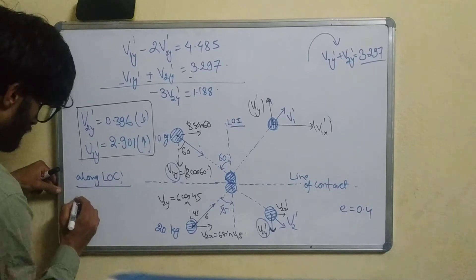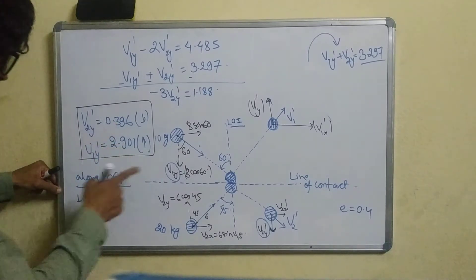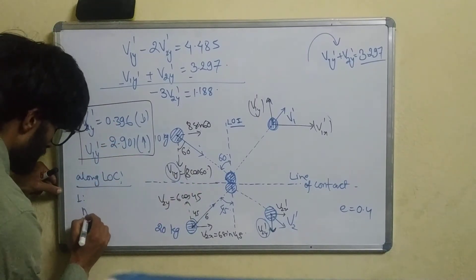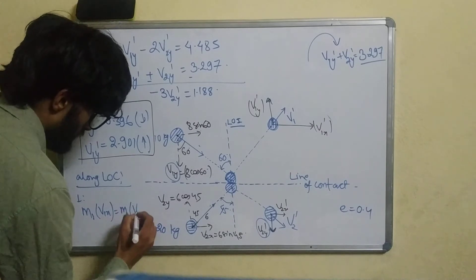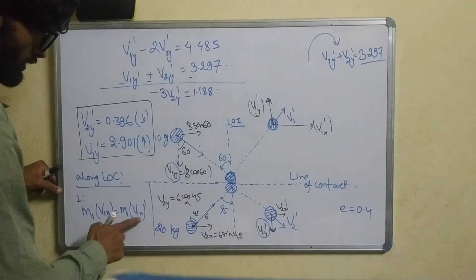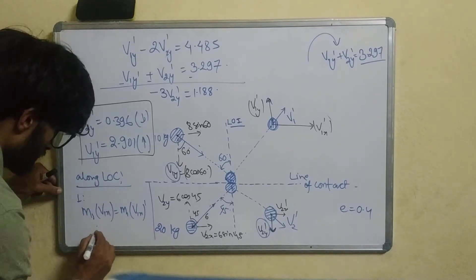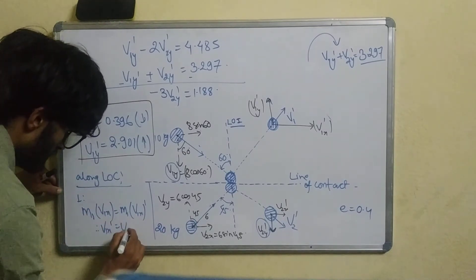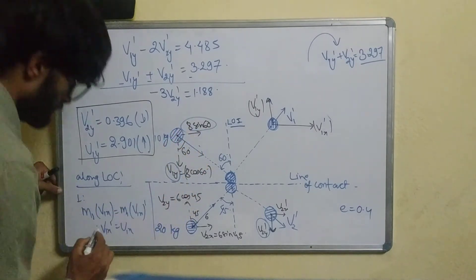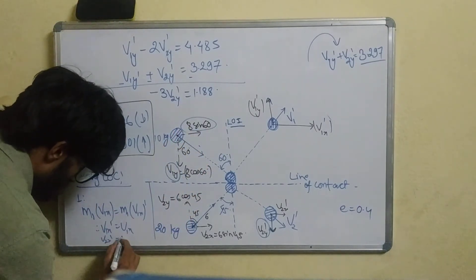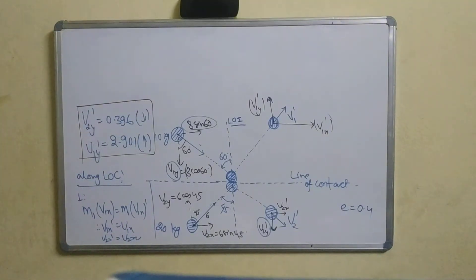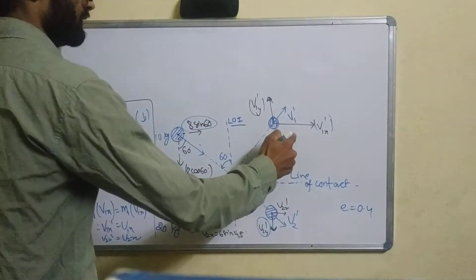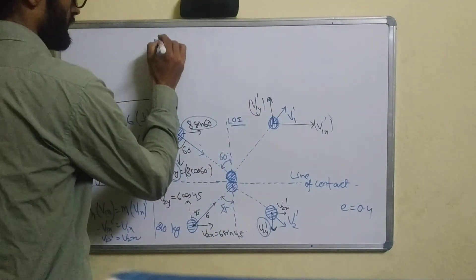Now, for particle 1 along the x-axis, momentum is conserved individually. m1·v1x = m1·v1x', so v1x' = v1x initial component. Similarly, v2x' = v2x, the x-axis velocity is unchanged for each particle.